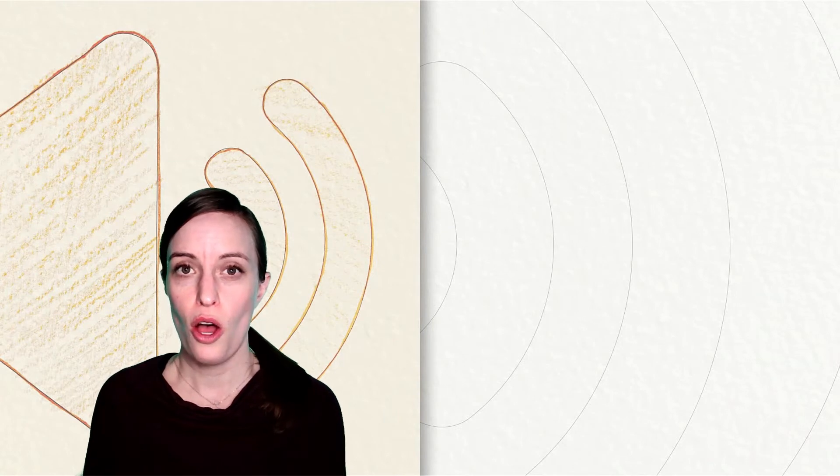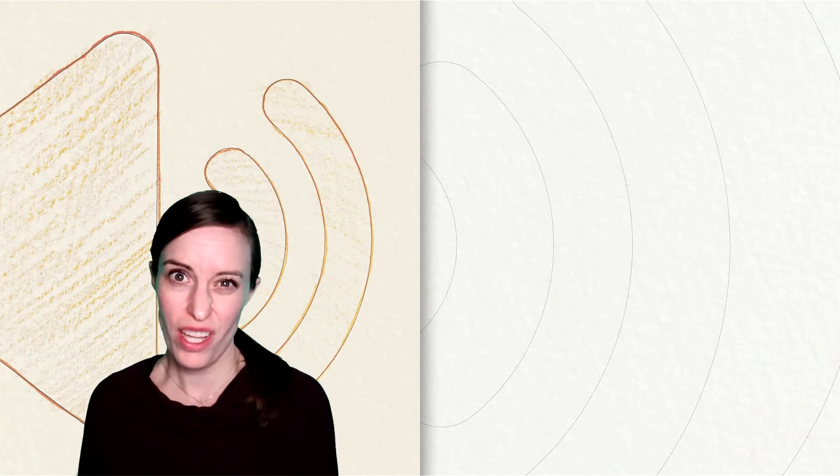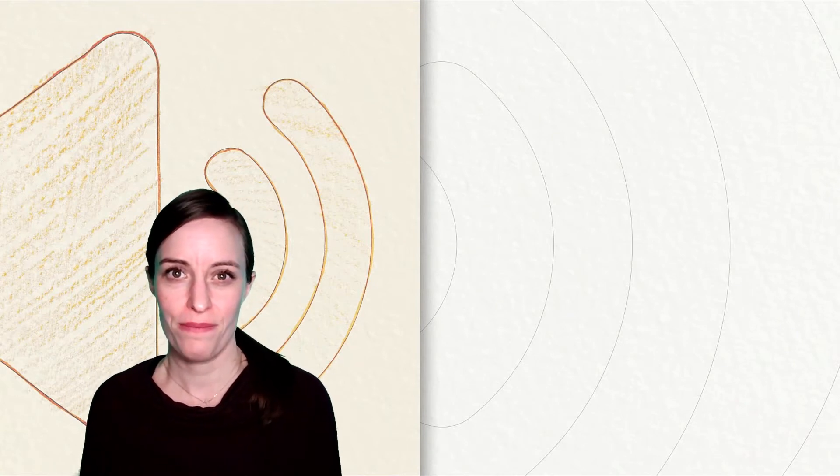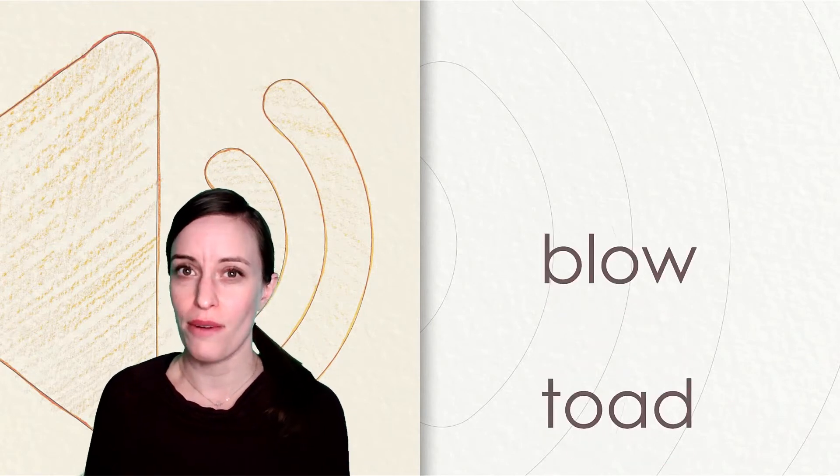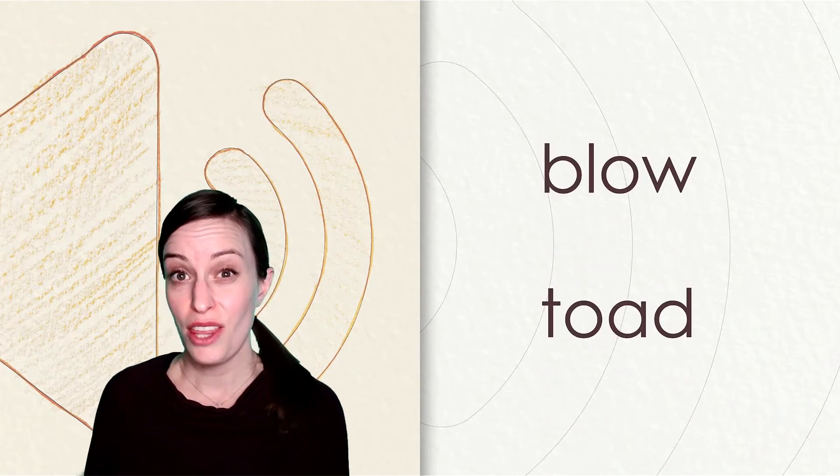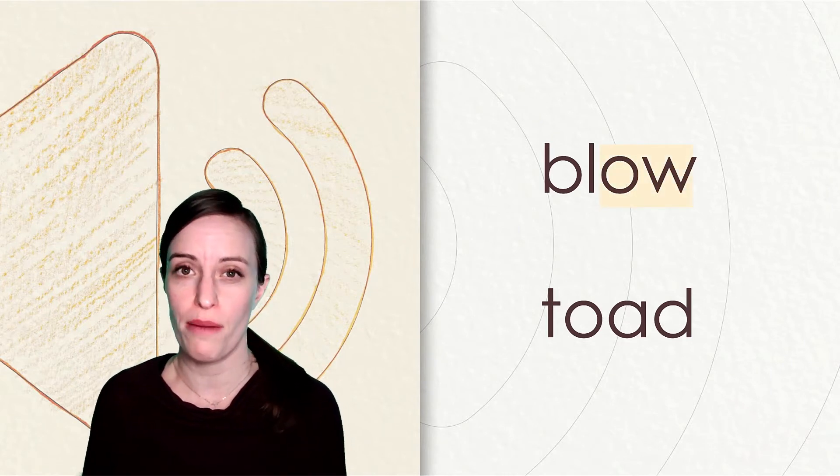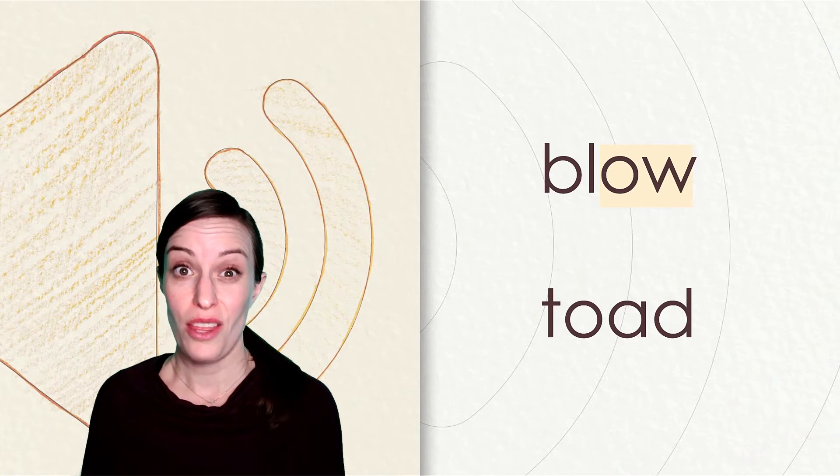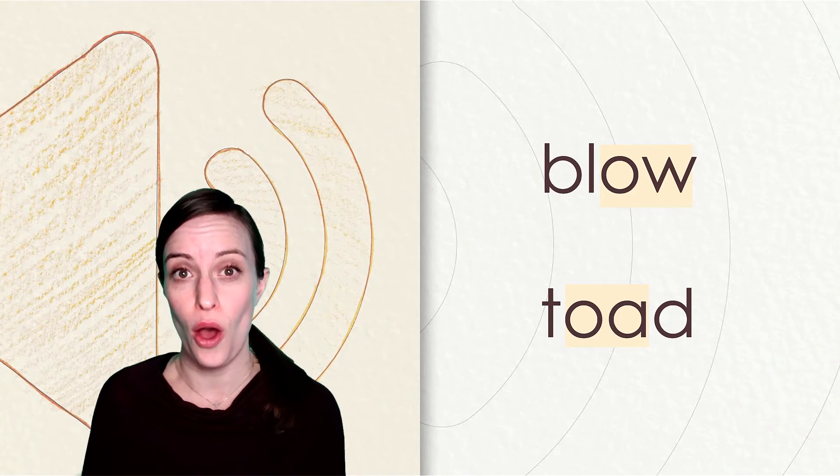Let's listen to another set of words. Blow and toad. What long vowel sound do you hear? If you said the o sound, that is correct. Let's look at how the long o sound is spelled. In the word blow, we hear the o sound made by the o-w. In the word toad, the o-a work together to say o.